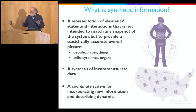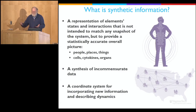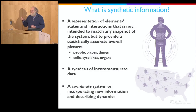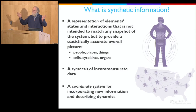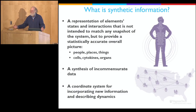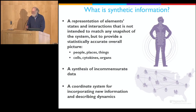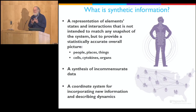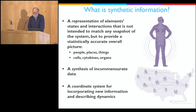We work a lot with populations, so we talk about synthetic populations. But these could be populations of anything—not just people and places, but cells or cytokines. We call it synthetic because it's both synthesized in the sense of built from other parts, and it's fusing a whole bunch of incommensurate data. Big data is something we've been living for 20 years. It's more than just a lot of data—it's data that was never meant to work together. When we create synthetic information systems, we try to find ways to make that data work together and provide insight into the system dynamics.